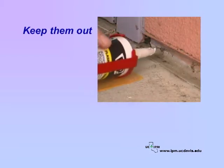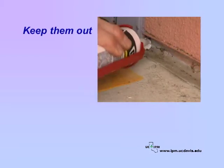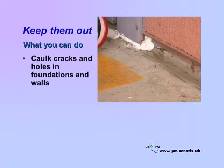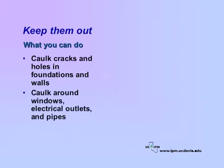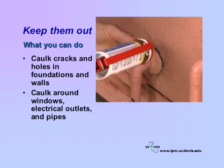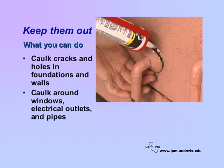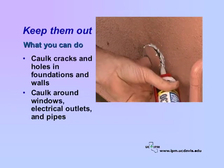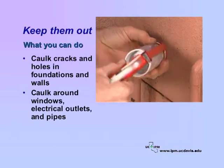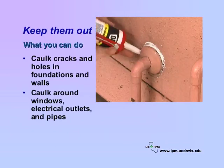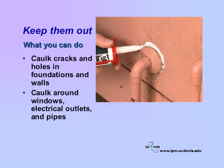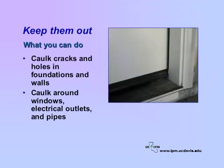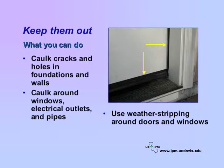No matter how hard you try to keep them out, ants always seem to find a way to enter buildings. However, there are a number of things you can do to keep most of them out most of the time. Caulk all cracks and holes in foundations and walls. Caulk around windows, electrical outlets, and pipes. On this pipe, we're going to try to seal the whole thing — the whole beauty ring onto the wall with a bunch of caulk behind here to stop the ants from getting into this pipe. Use weatherstripping around doors and windows. These methods must be combined with others for good ant control.